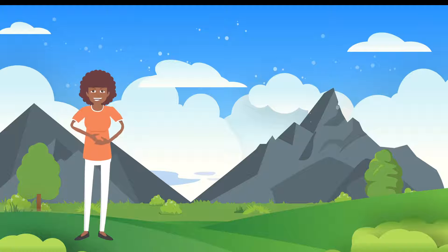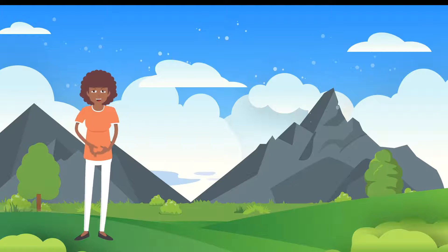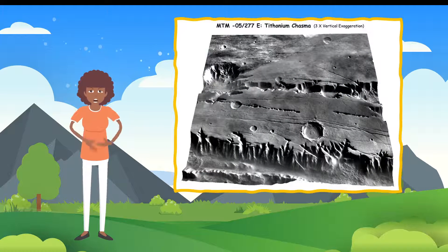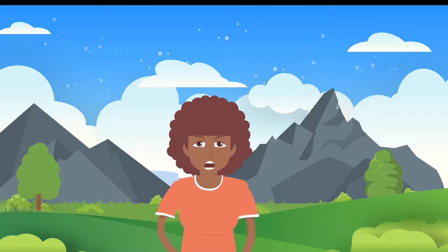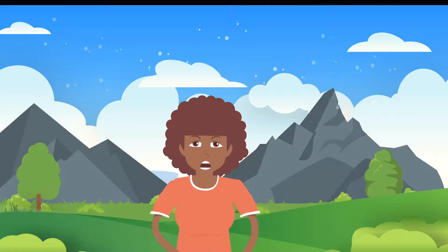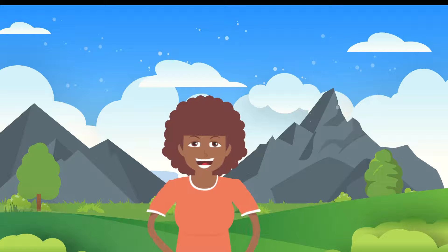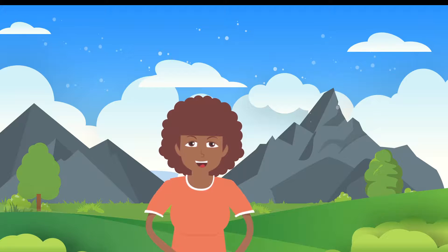Topographic maps are only one way to show what the terrain looks like in a certain area. We can also use computers to create three-dimensional digital models. There are other ways to create three-dimensional models that tell us what the terrain looks like — can you think of any?